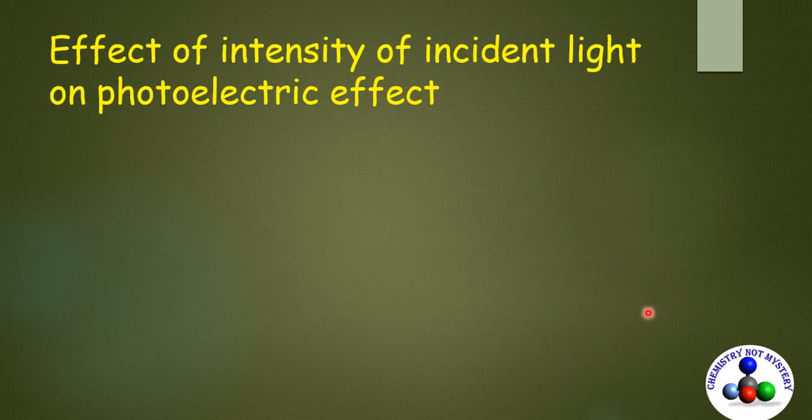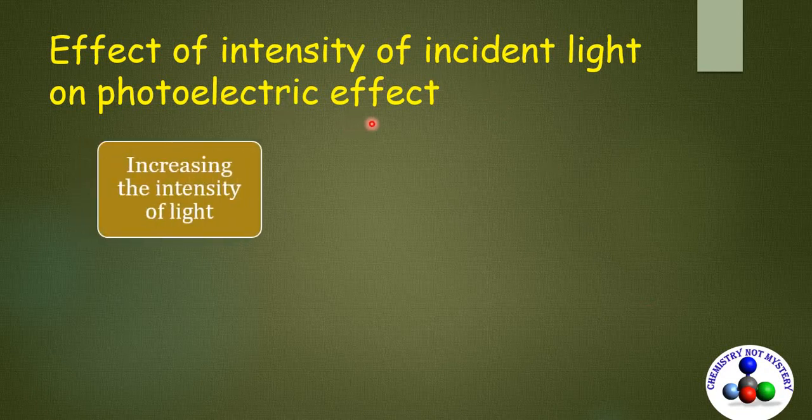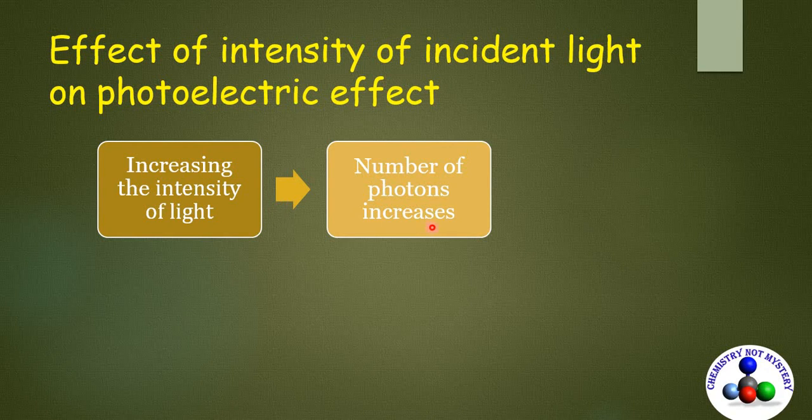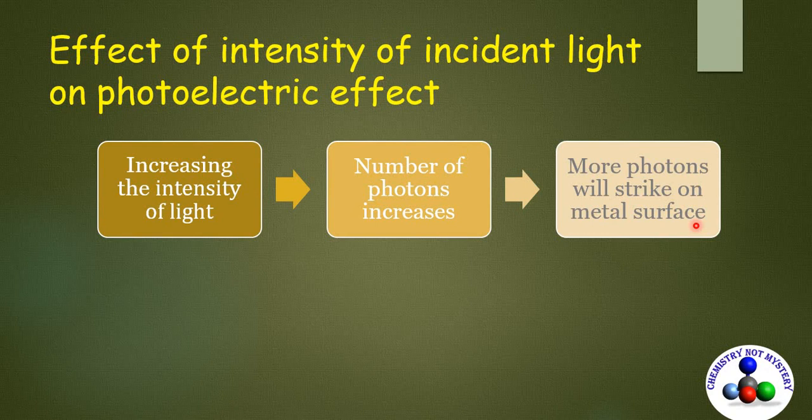How does the intensity of incident light affect the photoelectric effect? Intensity is defined by the number of photons. So on increasing the intensity of light, number of photons also increases. And now more photons will strike on the metal surface and more electrons will get ejected.